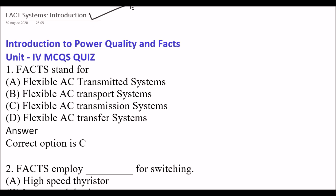Your first question is: FACTS stands for — Option A: Flexible AC Transmitted System. Option B: Flexible AC Transport System. Option C: Flexible AC Transmission Systems. Option D: Flexible AC Transfer System. The right answer is Option C, Flexible AC Transmission Systems. This is a very important question — even a basic-level question like this can earn you one mark in your exam.